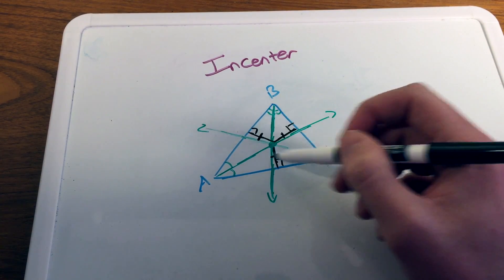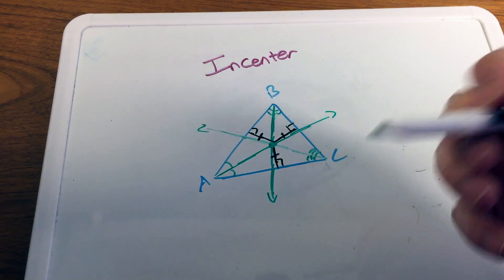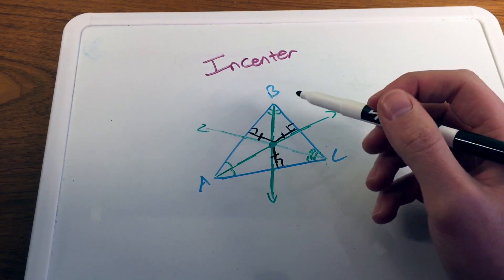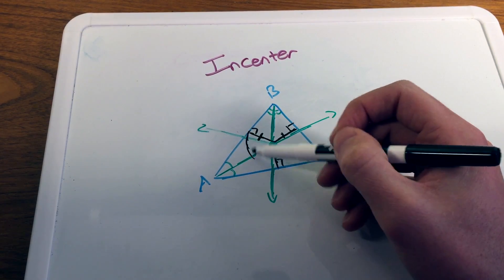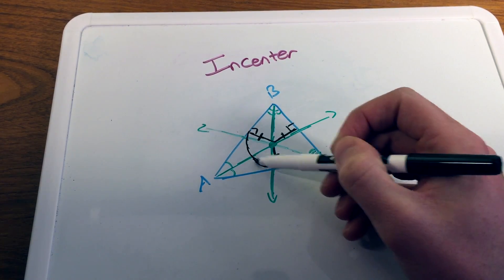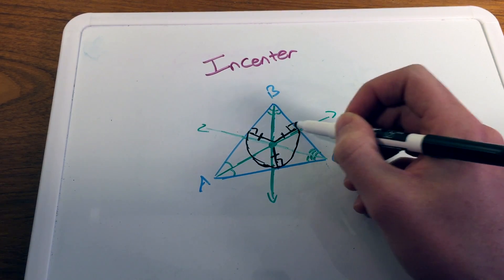And again, now we have three congruent segments that are kind of going around. We can say, oh, there might be a circle, the incenter, the center of a circle. And then this is actually a circle that's inside of the triangle that touches each of the sides of the triangle itself once.